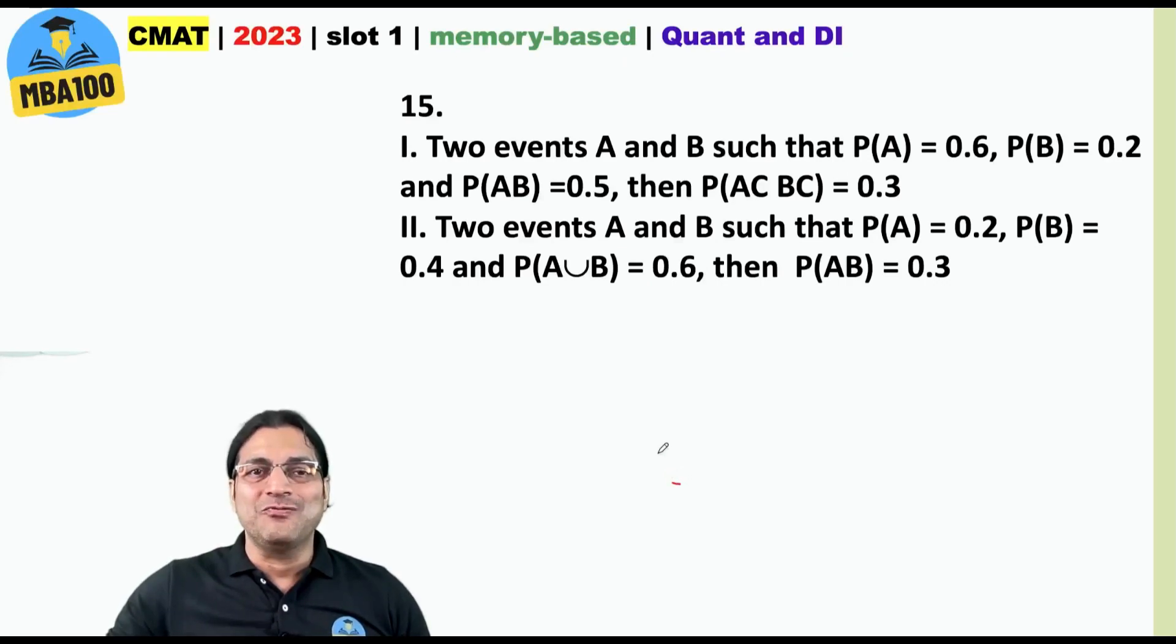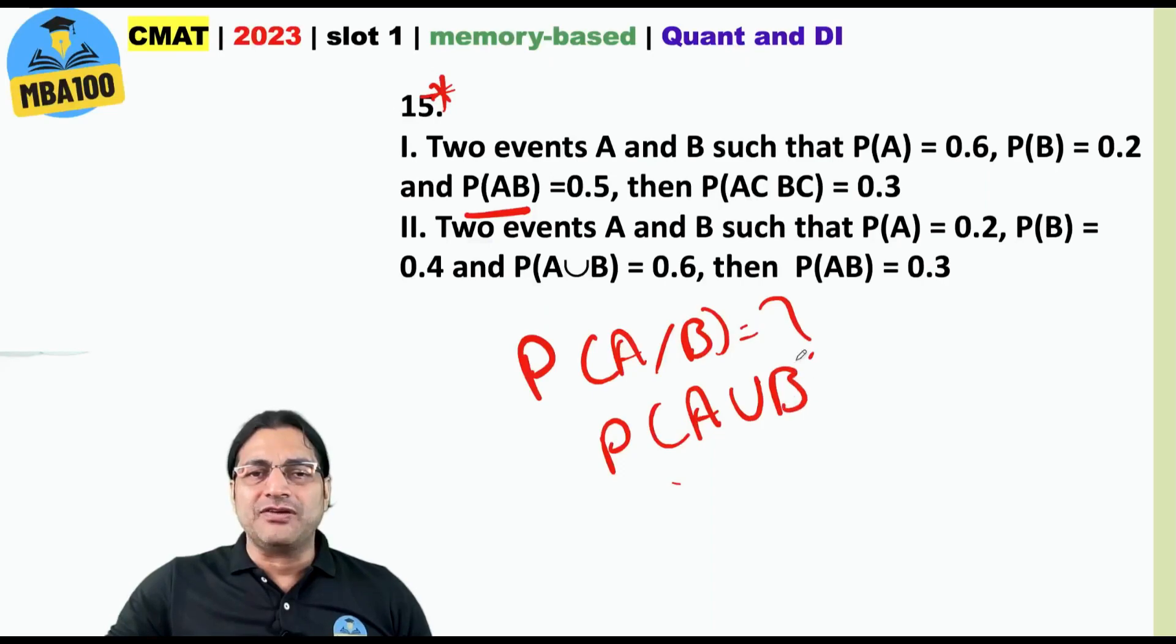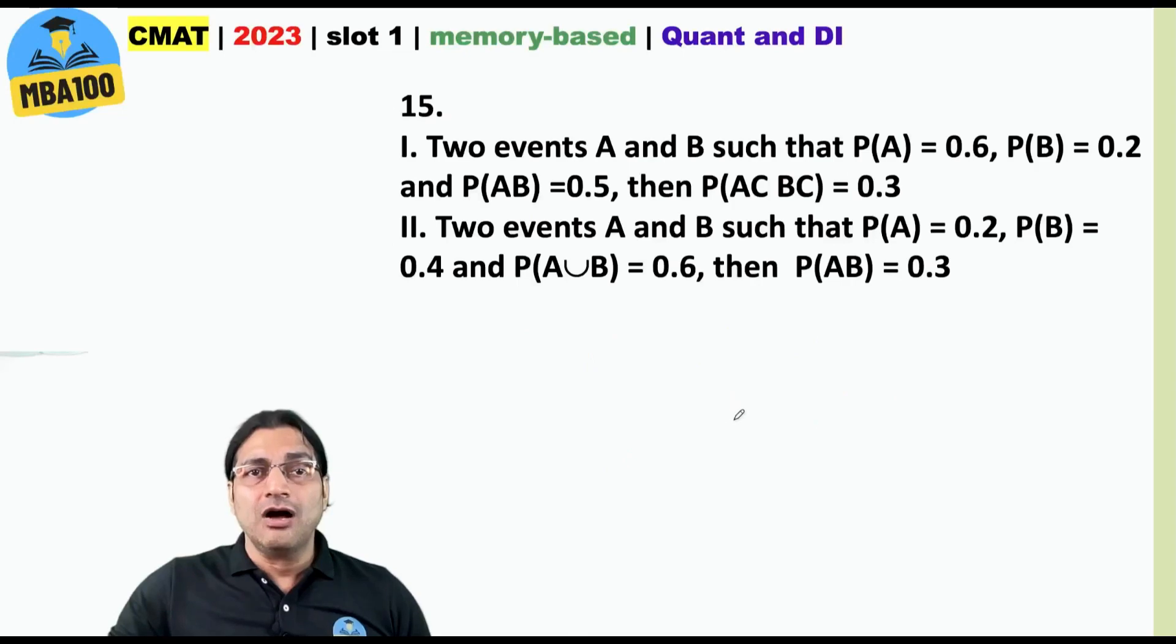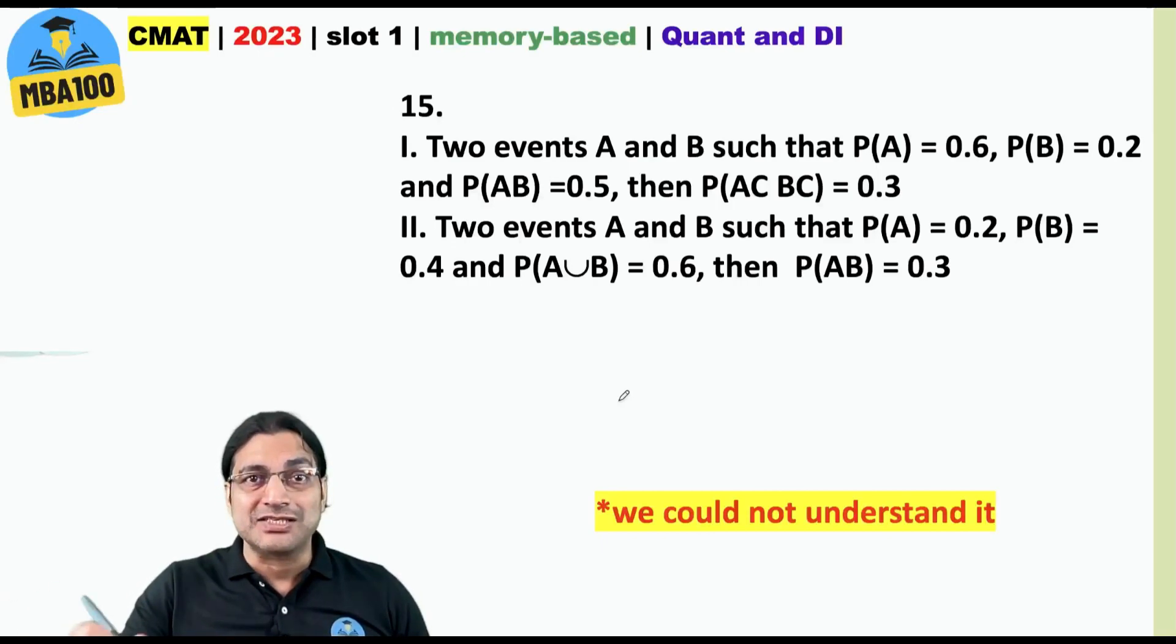Now here we are certainly going to challenge this question as well. And why so? What does it mean? Was it probability of a when b has already happened? Or they tried to say probability of a union b? Do we know? No we do not. So how can we decide? We could not understand it. If you could understand it please put that understanding in the comment section of this video.